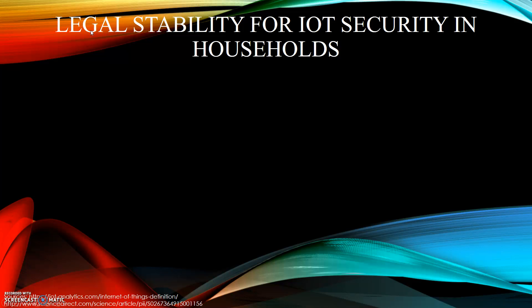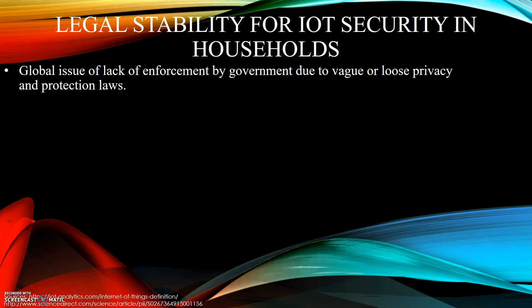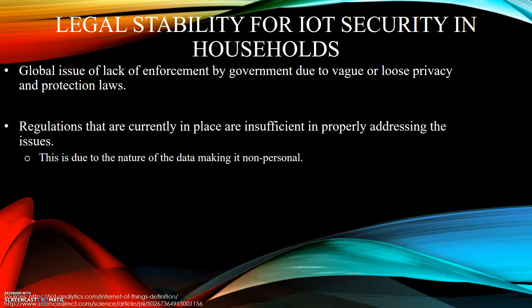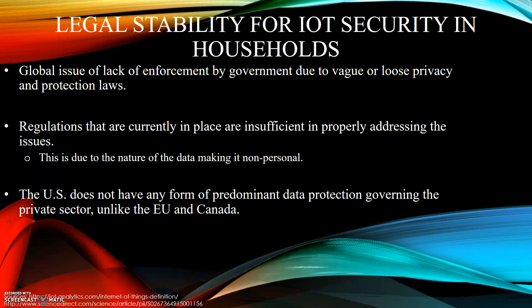Legal Stability for IoT Security in Households. The global issue of the lack of enforcement by government due to vague or loose privacy and protection laws is something we can see globally. Regulations that are currently in place are insufficient in properly addressing the issues, which may be due to the nature of the data making it non-personal, as stated previously. The US does not have any form of predominant data protection governing the private sector, unlike the EU and Canada, though the US does have predominant data protection governing the public sector.